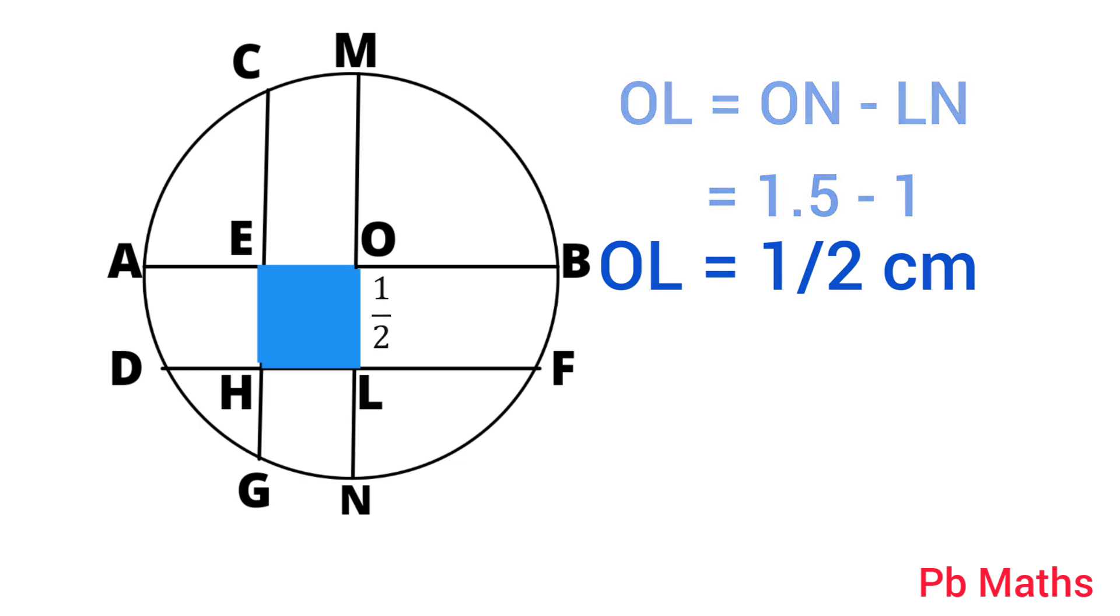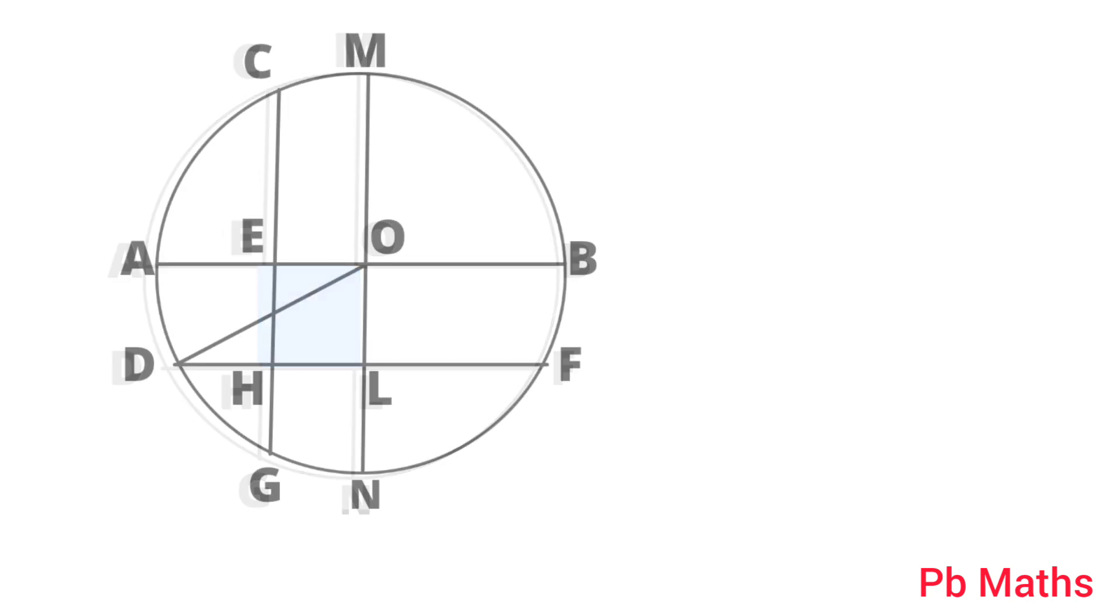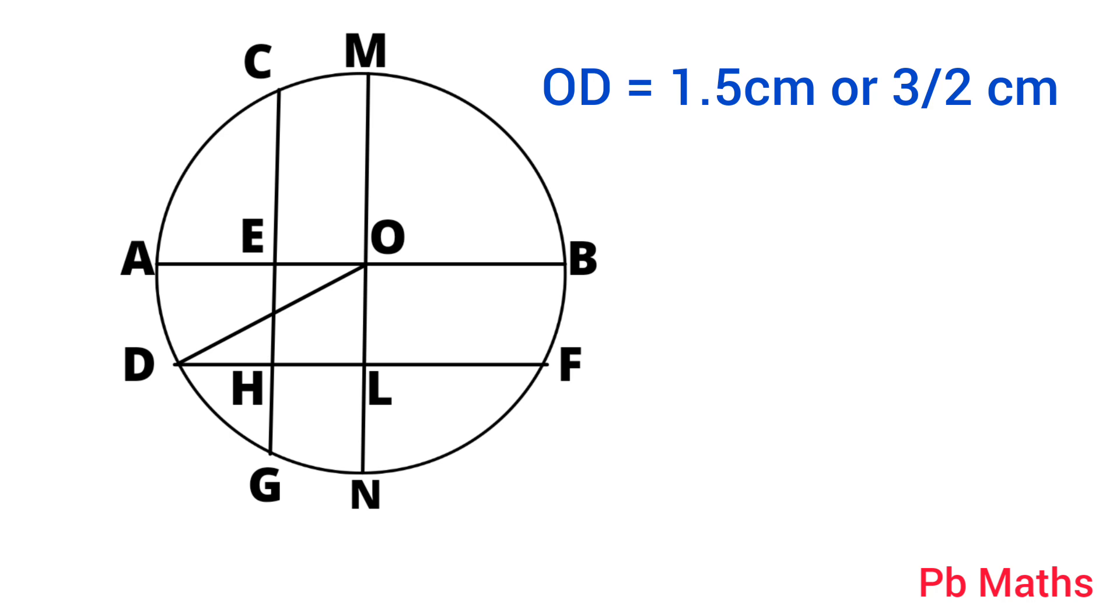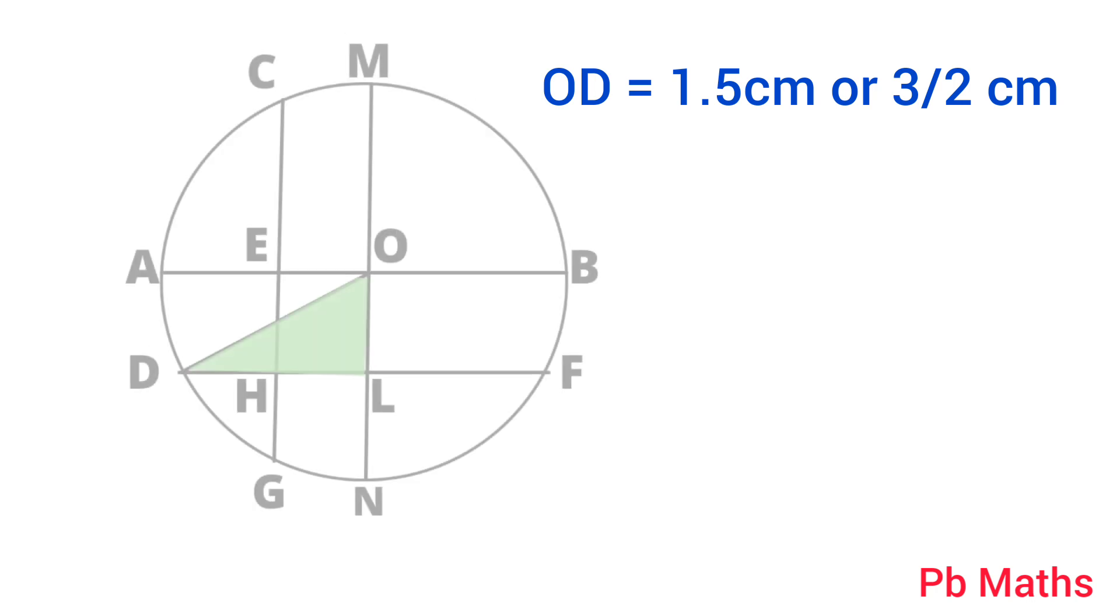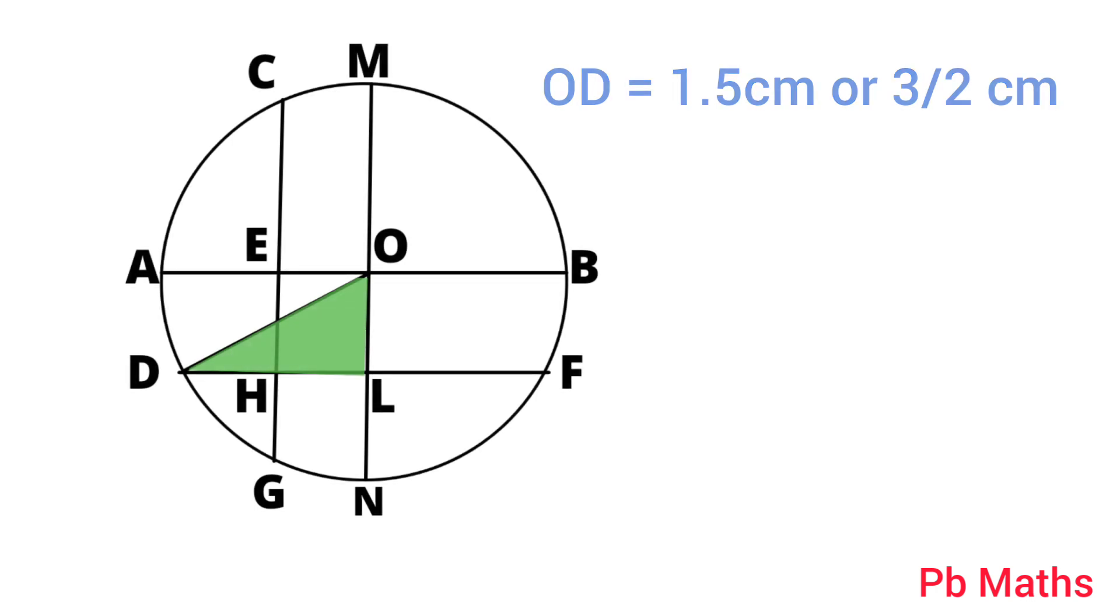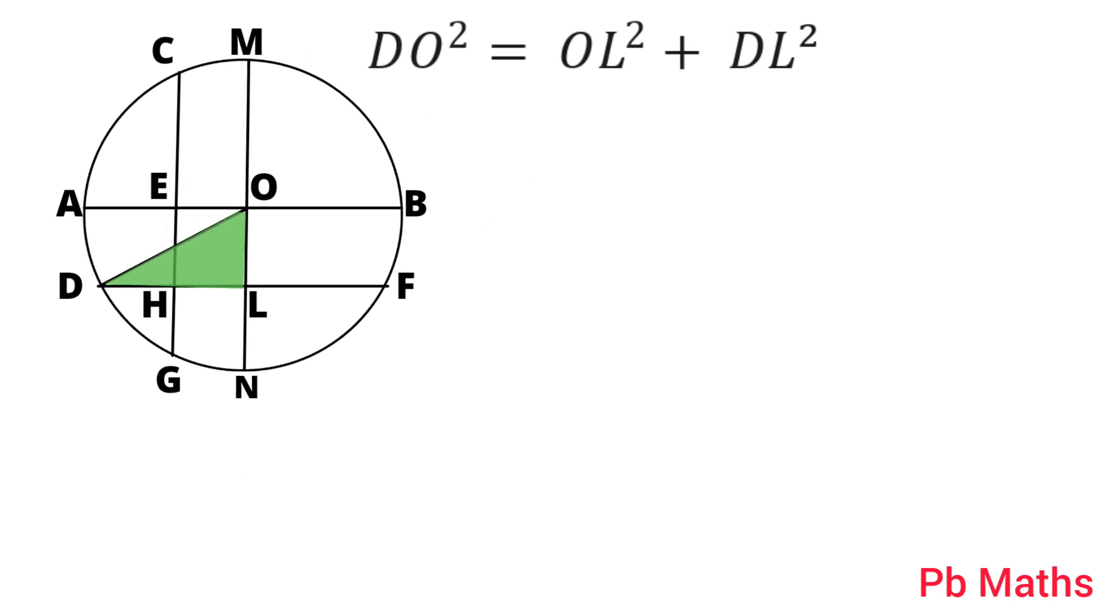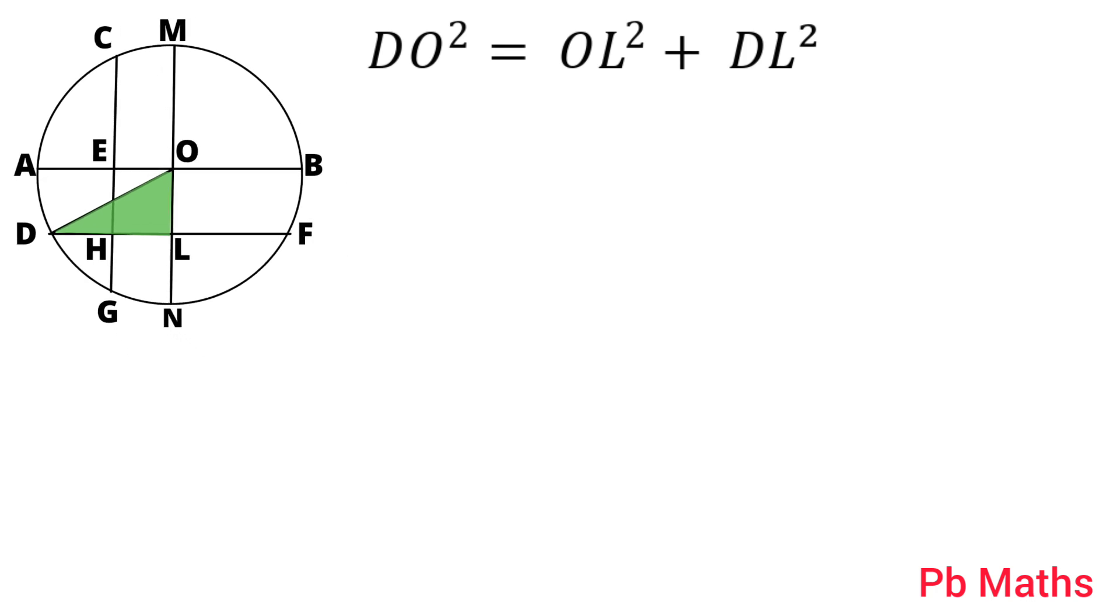Now, to calculate DH, let's join O and D. OD is now the radius of the circle, which is 1.5 cm or 3/2 cm. Now, in right angle triangle DOL, we can use Pythagoras theorem. With the help of Pythagoras theorem, we can write DO² equals OL² plus DL².